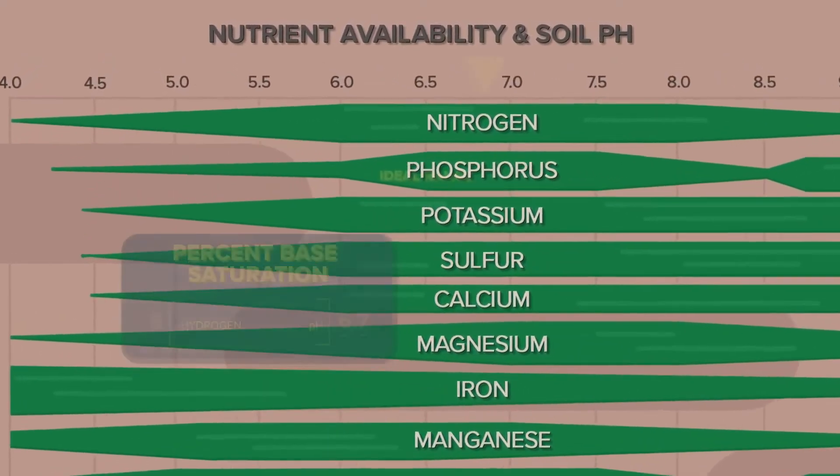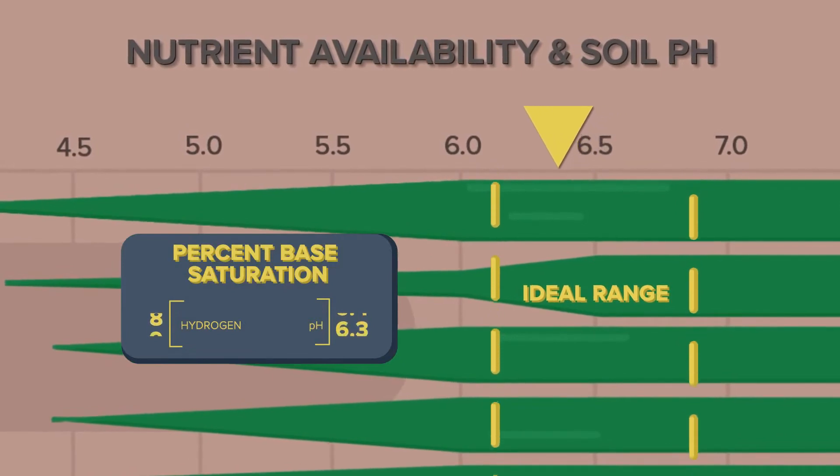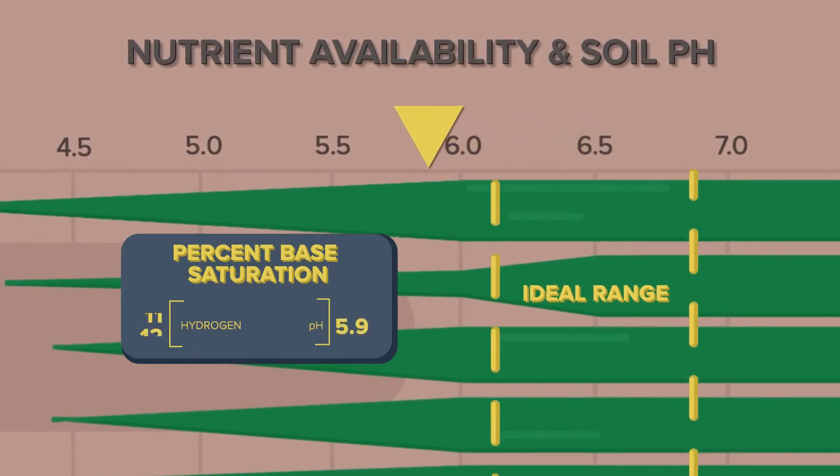We've talked about the optimum pH range for different crops — we'd like to keep it between 6 and 7. Normally, if my percent-based saturation of hydrogen starts to exceed 10, that means my pH is dropping below 6.2, which moves me out of the optimum range for production. Hydrogen is added to the soil through rainfall — as it rains, it creates a chemical reaction through the soil that builds that hydrogen level. That's why we often see naturally lower pHs in areas of the country that have higher rainfall.